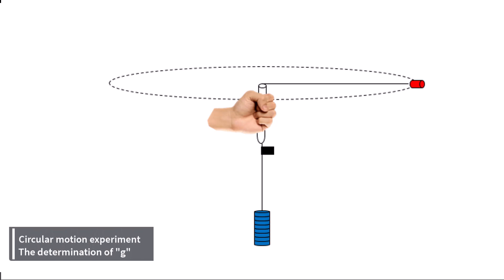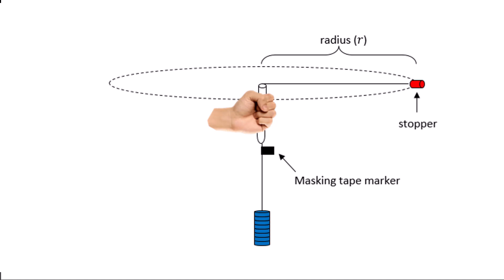You have in front of you a basic diagram of the apparatus used with the circular motion experiment. It consists of a rubber stopper on a string of fixed radius that's rotated around in a circular motion. There's a masking tape on the string that keeps the radius fixed to a certain amount as you swing that around.